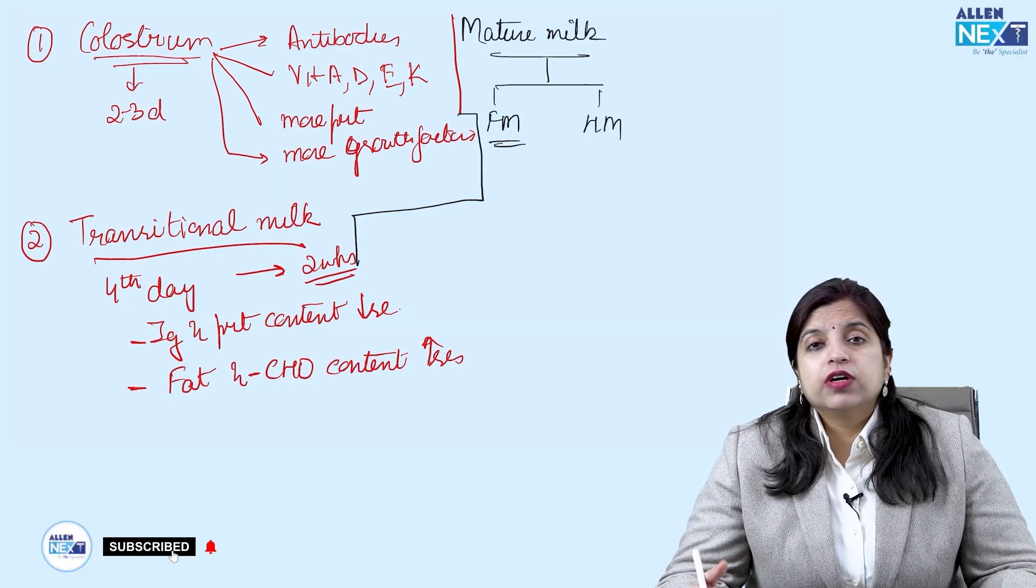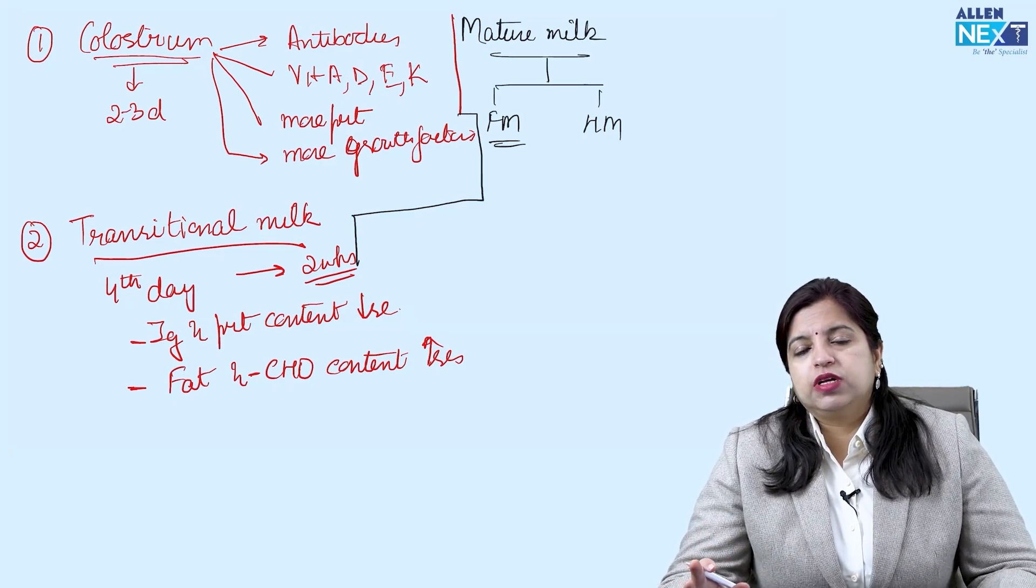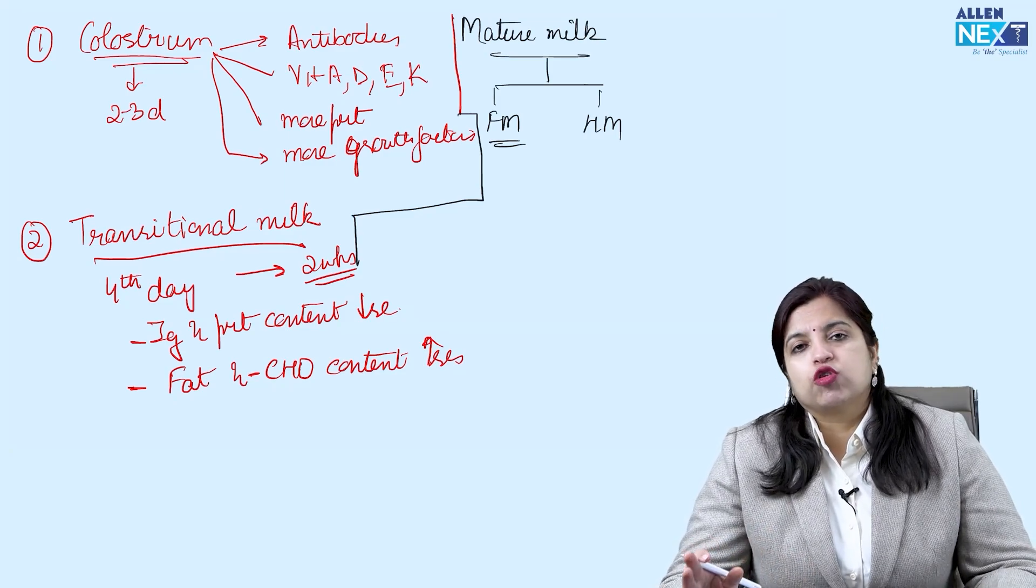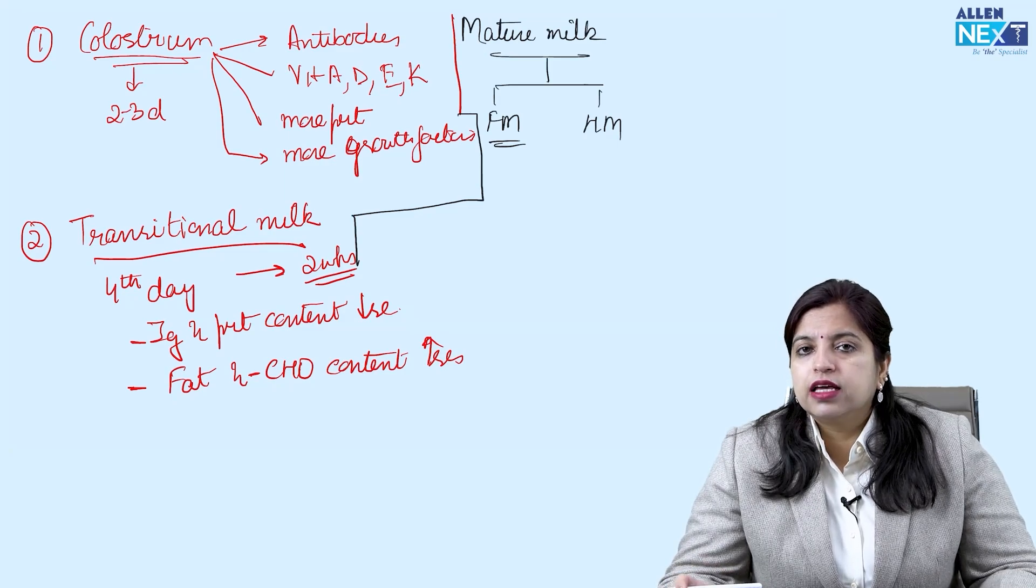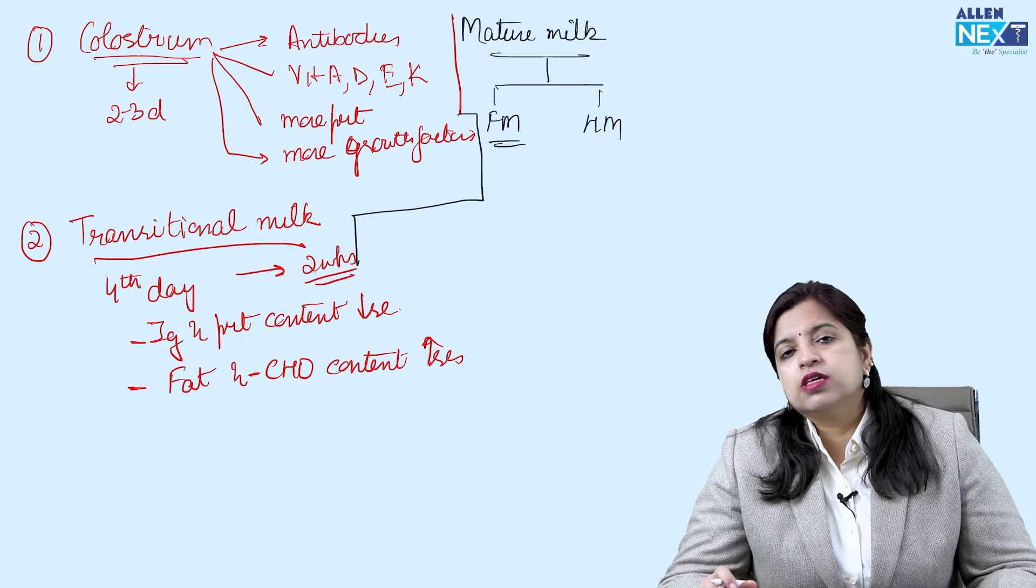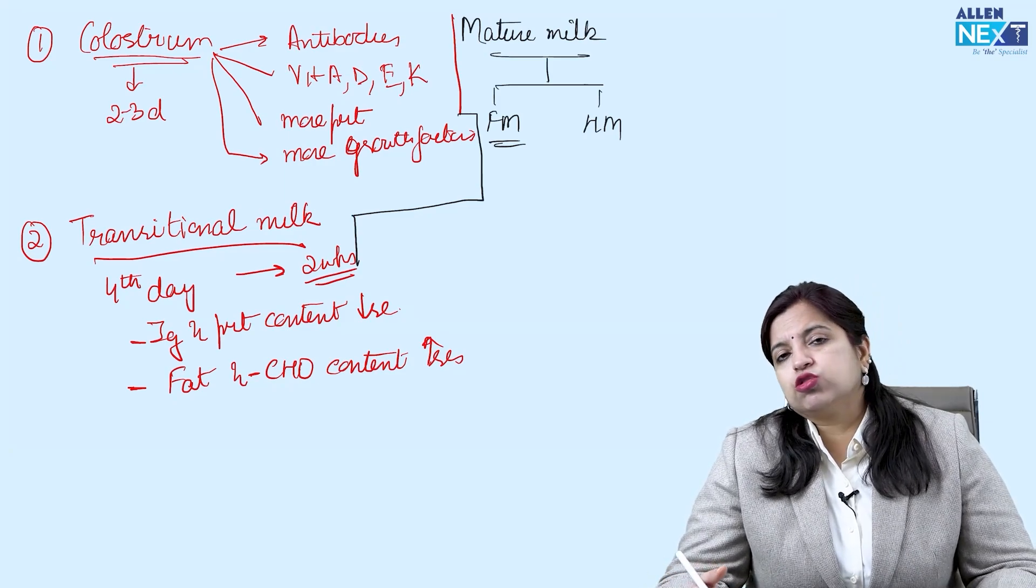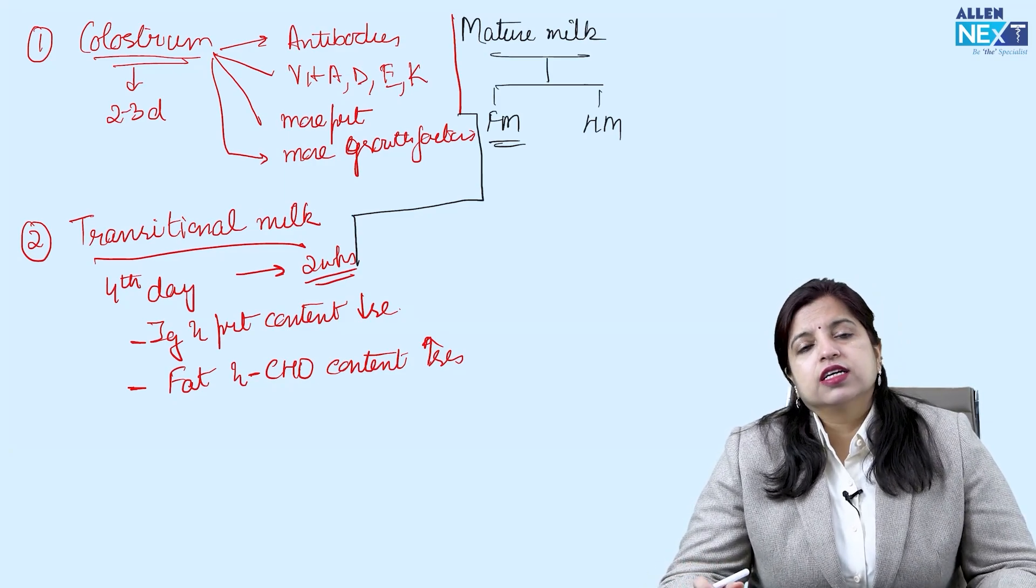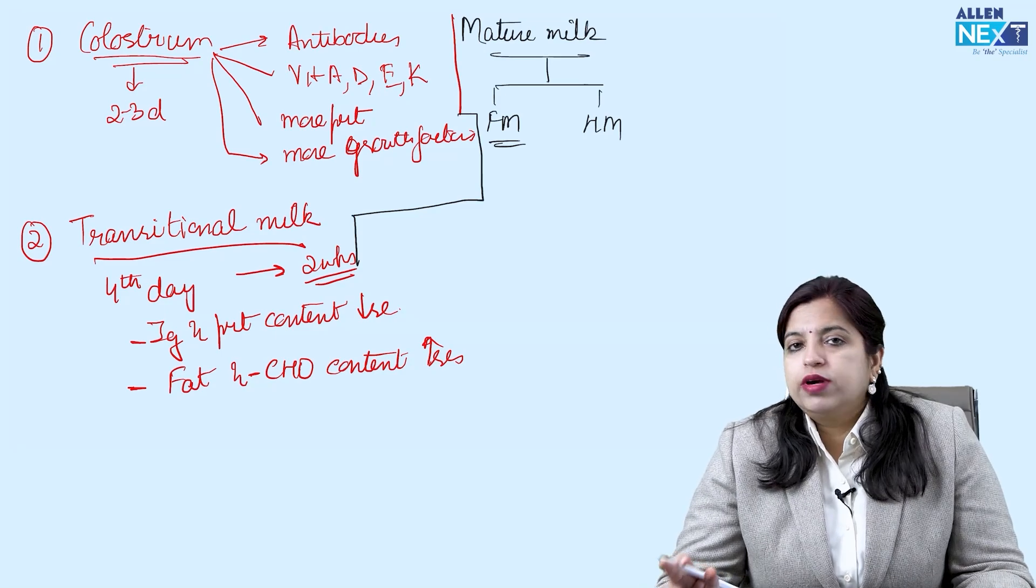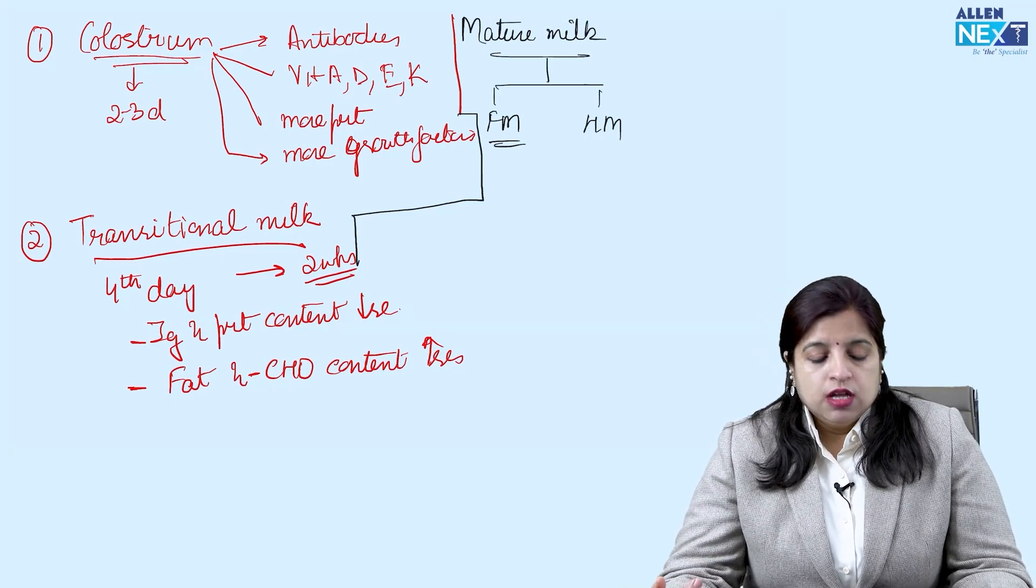That is why it is advised that whenever you advise anyone for breastfeeding, please tell the mother to breastfeed at one go for at least 15 to 20 minutes. Because if she will be changing the breast in 5 minutes, 7 minutes, then she will be just giving foremilk to the child, and such a child is cranky, is not satisfied, will be crying most of the time, and what translates into the mother is that my milk is not enough. So, it is advised that breastfeeding should be continued from one breast for at least 10 to 15 or 15 to 20 minutes depending on the amount of breast milk.